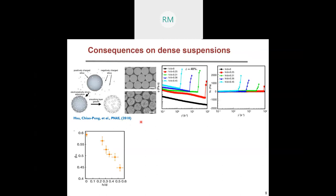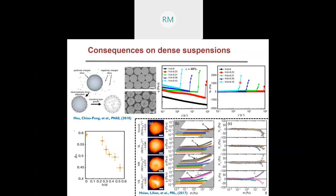In a dense suspension setting, since increasing roughness decreases the jamming fraction, we expect the suspension to undergo shear thinning at an earlier shear rate as well as at a lower volume fraction. This was observed in experiments where roughness was introduced artificially by attaching nanoparticles on the surface of the base particle. They observed that increasing roughness leads to earlier shear thinning as well as a switch in the sign of the first normal stress difference.